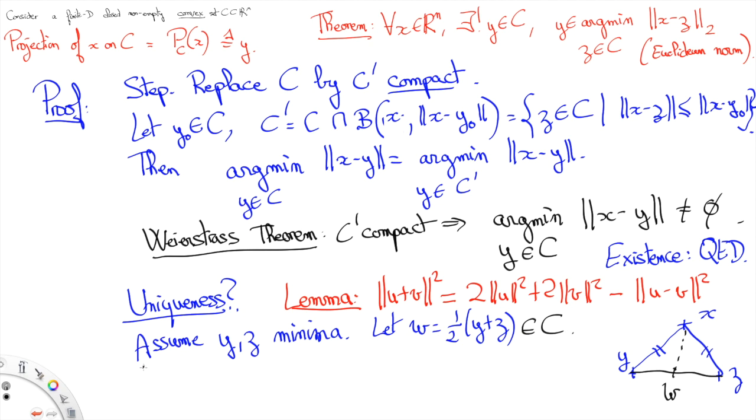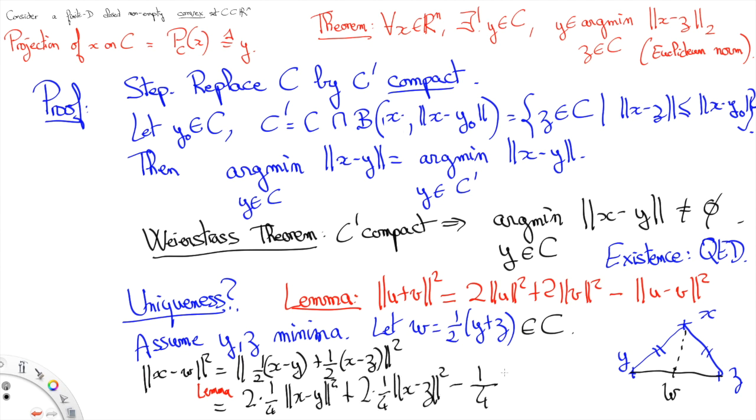Indeed let's compute X minus W squared. This is equal to one half of X minus Y plus one half of X minus Z. Now we're going to apply the lemma we've just proved. And this gives us one half of X minus Y squared plus one half of X minus Z squared minus one fourth of Y minus Z squared.